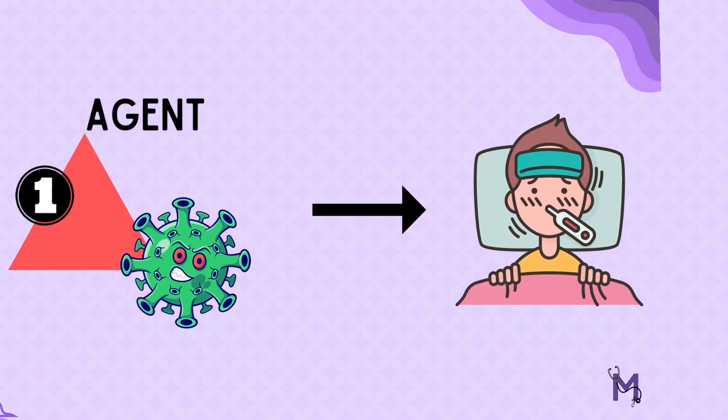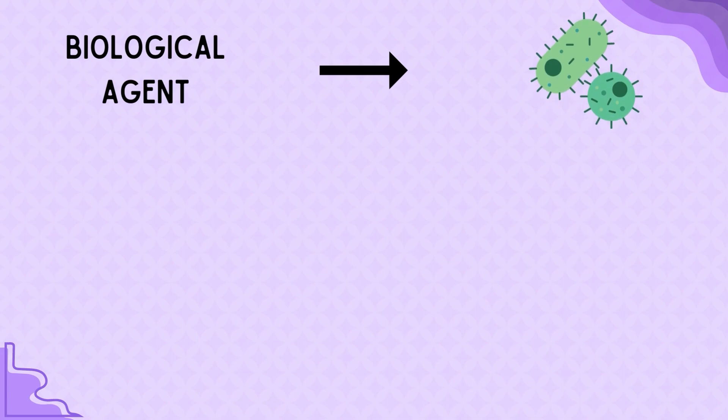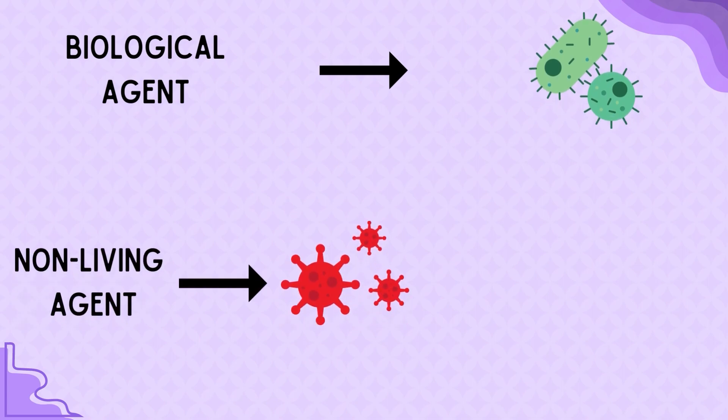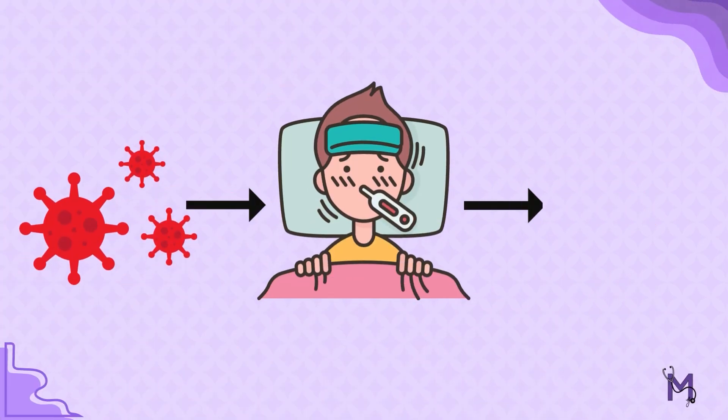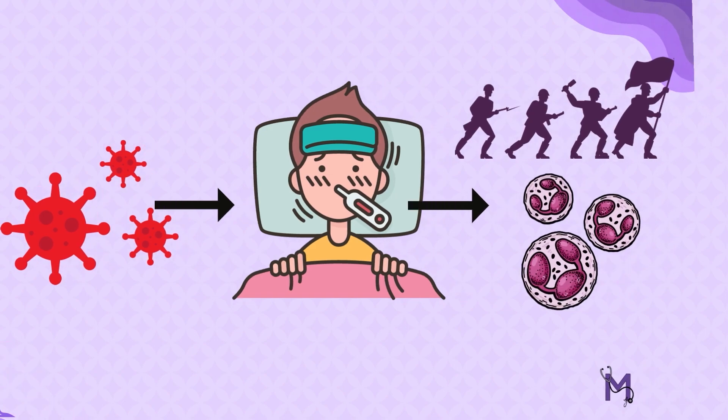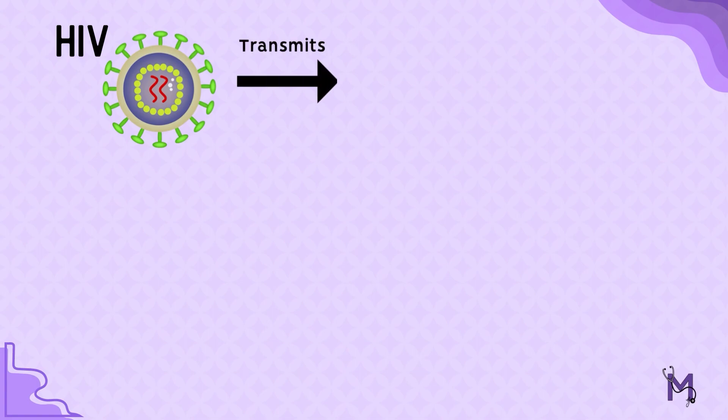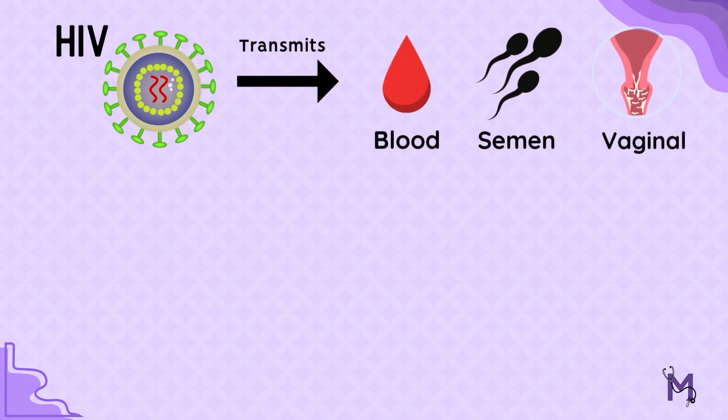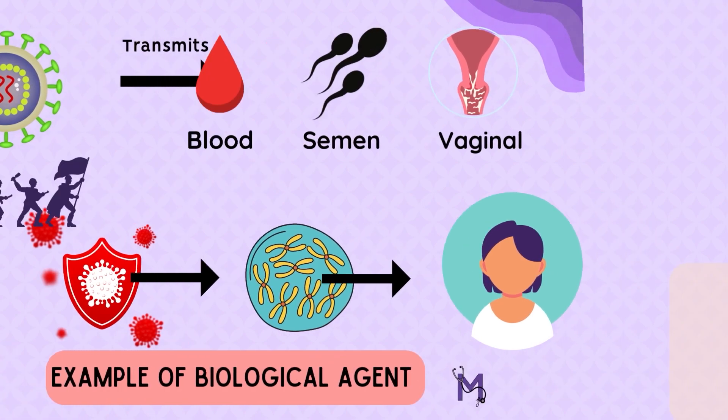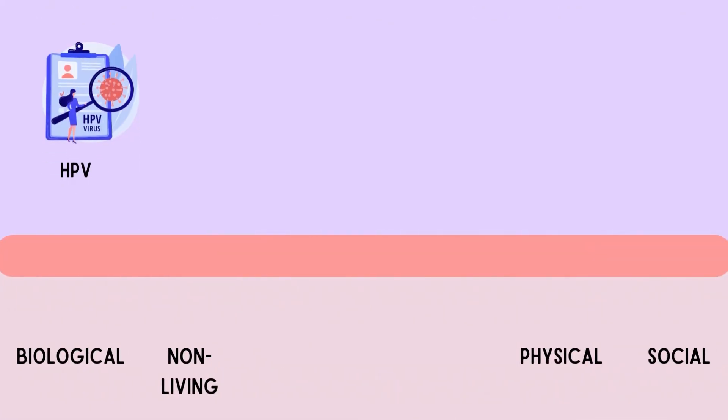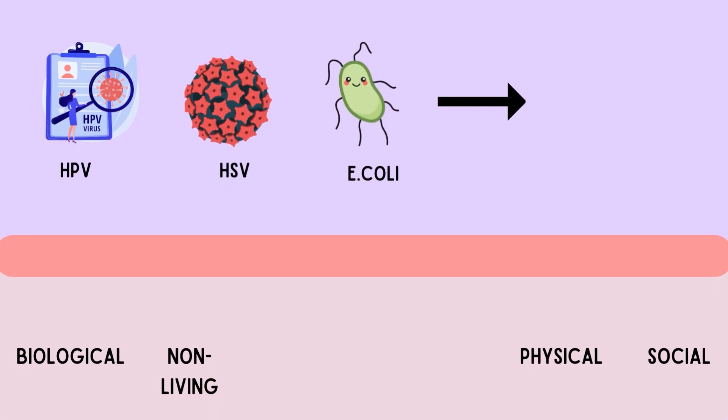Agents could be biological like bacteria, or non-living agents like viruses. Viruses are considered non-living because they cannot reproduce on their own and require a host cell to replicate. However, they can still cause disease by infecting and damaging host cells. Human immunodeficiency virus is an example transmitted through blood, semen, and vaginal secretions. It belongs to the retrovirus family and attacks the immune system by inserting its genetic material into the DNA of the host. Other bacteria and viruses like HPV, HSV, and E. coli can also attack the host and cause disease.